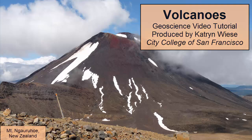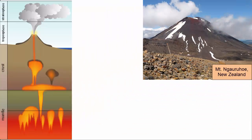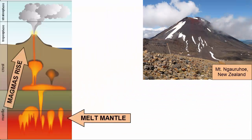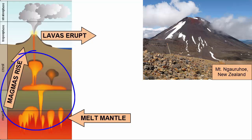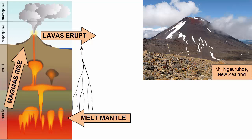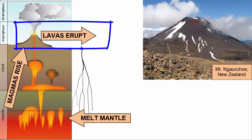Volcanoes and volcanic activity are found wherever rocks inside the Earth have melted and rise buoyantly to the surface to erupt. We call molten rock underground magma. Magma is less dense than the solid rock that surrounds it, thus it will migrate upwards towards Earth's surface. Migration happens along cracks between solid rocks. Gradually, the cracks intersect and magmas pool together in magma chambers, which usually sit a few kilometers below Earth's surface. When magma erupts and flows on the surface, we call it lava.